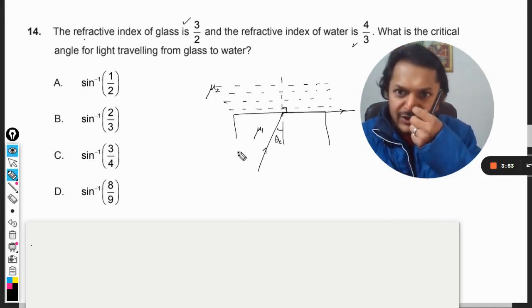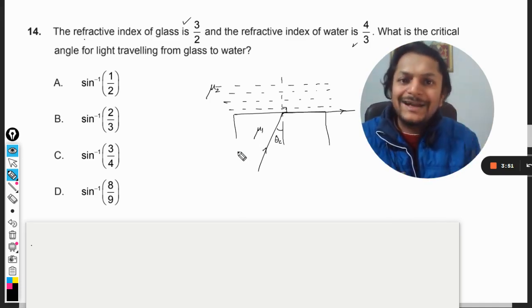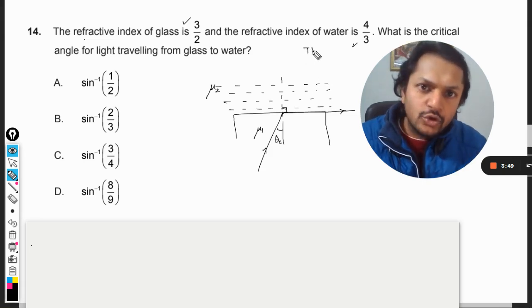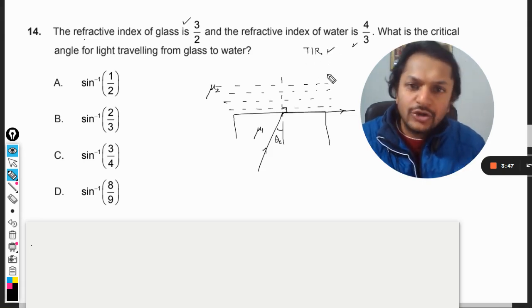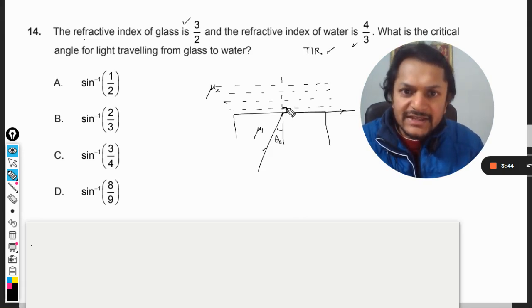So what is the critical angle for the light traveling from glass to water? Critical angle means that this topic is from total internal reflection and in that topic what is our condition is that this angle should be 90 degrees.